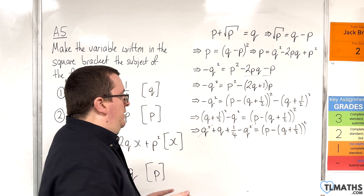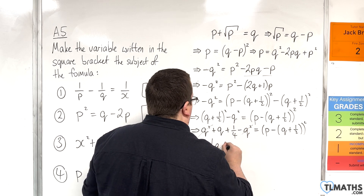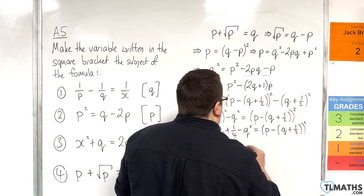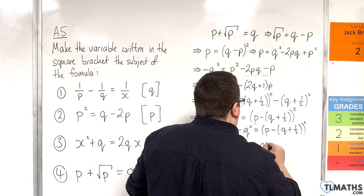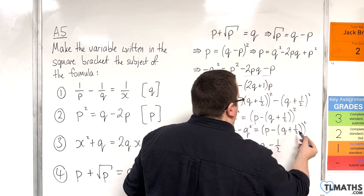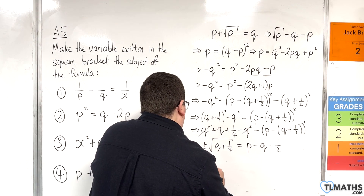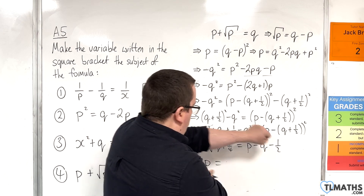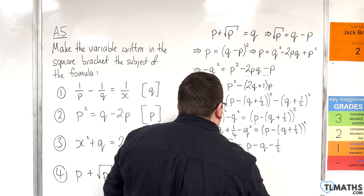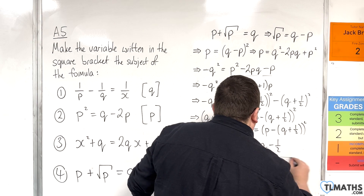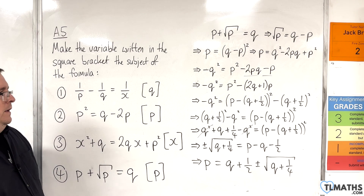And I've got P take away Q plus a half squared on the right-hand side. Now I can square root both sides. That's going to bring in a plus or minus, and the two terms I've got left are Q plus a quarter. And that's going to be equal to P take away — I'll remove the brackets now — take away Q, take away a half, because that minus 1 is working all the way through that bracket. Then, writing P on the left-hand side and rearranging: P equals Q plus a half, plus or minus the square root of Q plus a quarter.